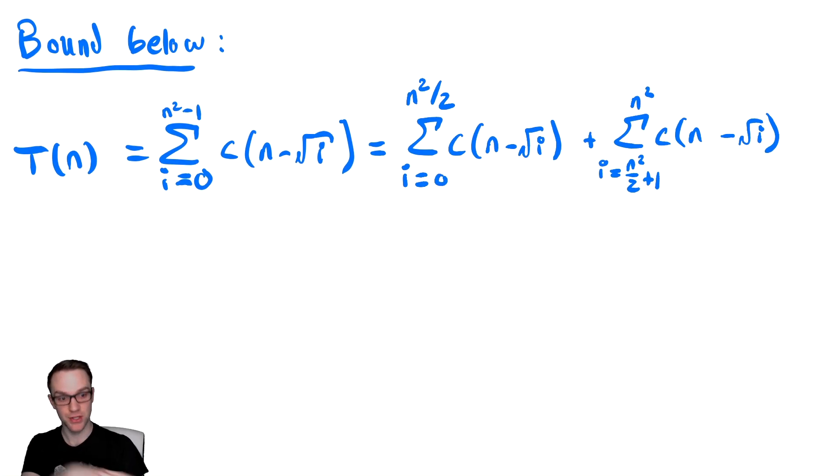Now we need to remove one of these summations. We always remove the smaller of the two and keep the larger summation. So to bound this below, I'm going to drop the second summation because this is a decreasing sum, meaning the smaller values of i are the bigger values. So I'm going to keep the first summation.